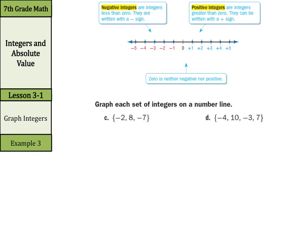When we're asked to graph each set of integers on a number line, start off by drawing yourself a number line. Our biggest number here is going to be 8, so we're going to need 0, 1, 2, 3, 4, 5, 6, 7, 8. And then negative 1, negative 2, negative 3, negative 4, negative 5, negative 6, negative 7.